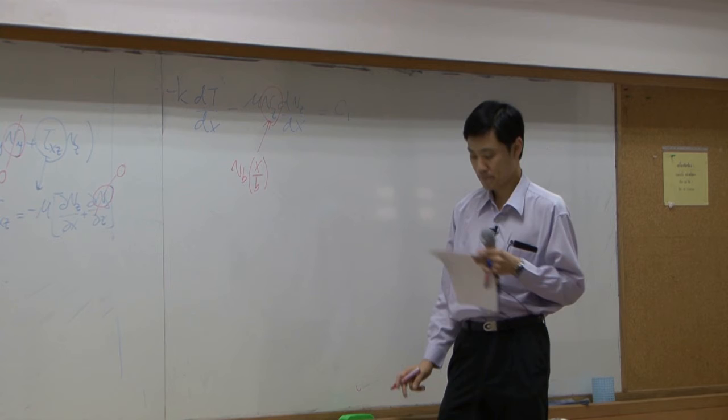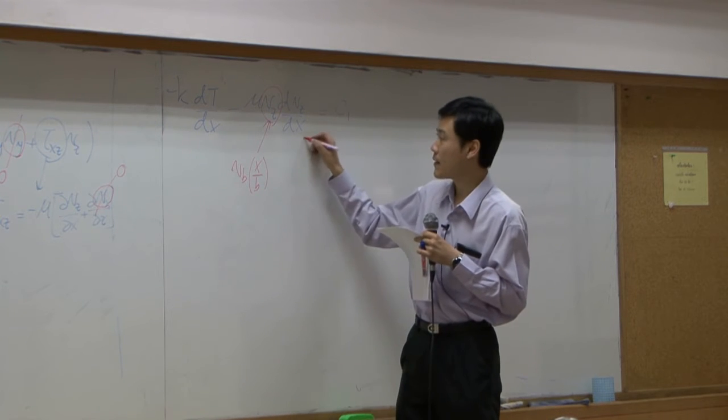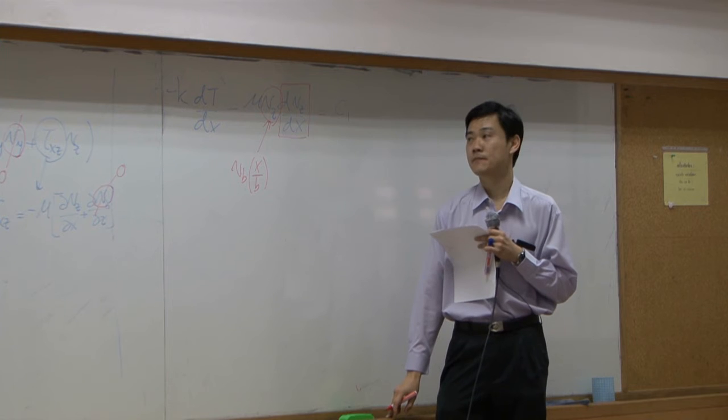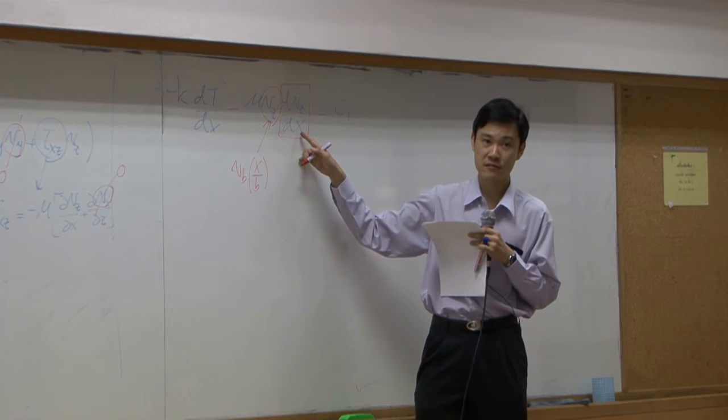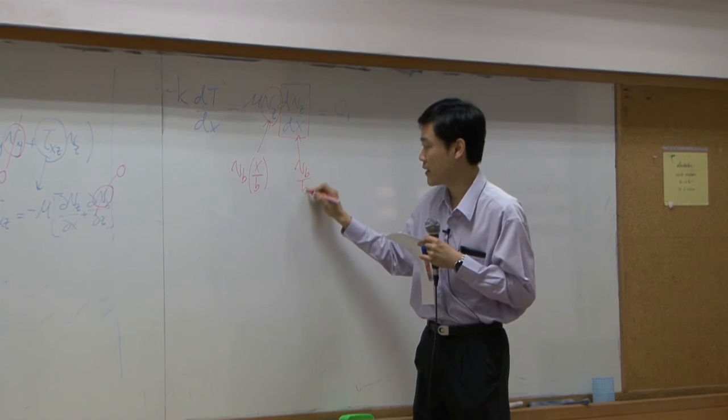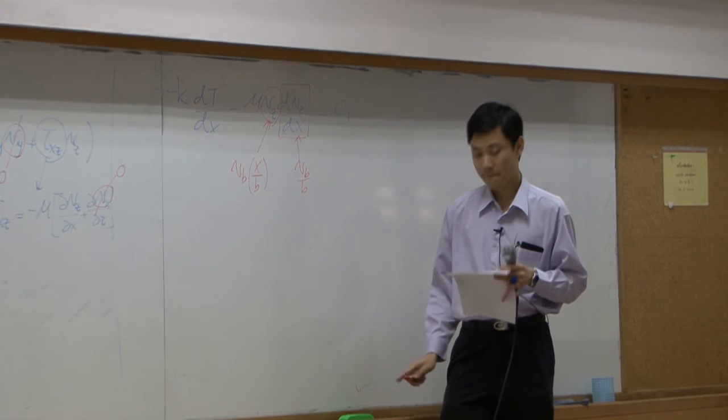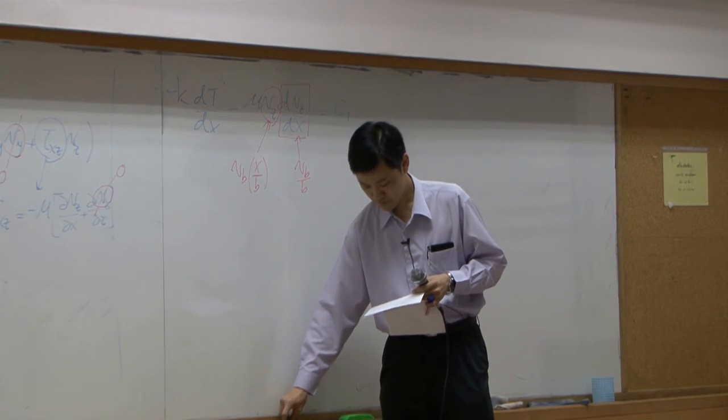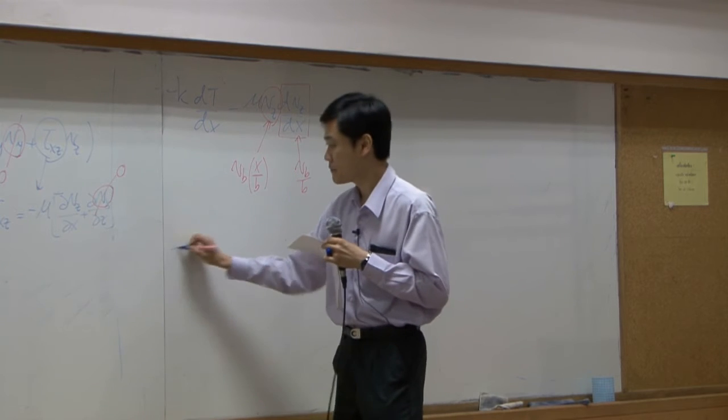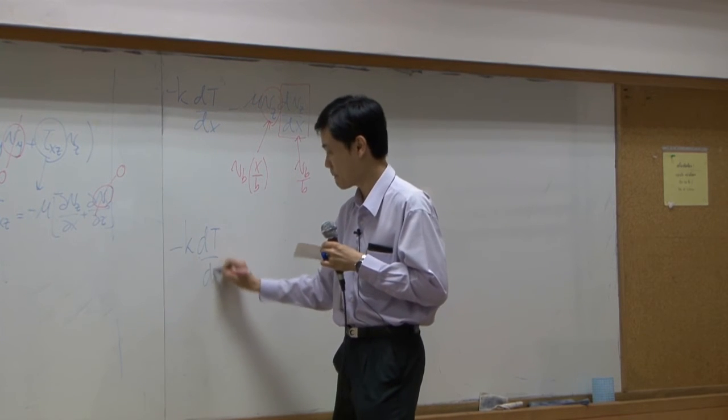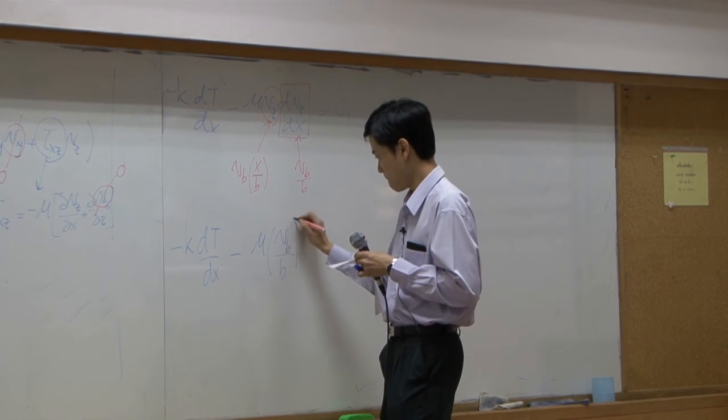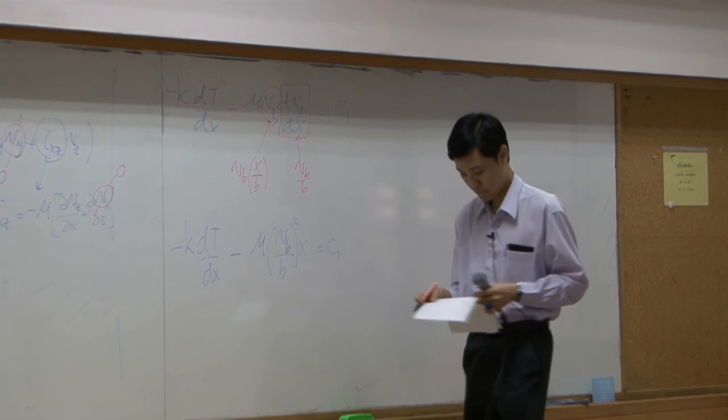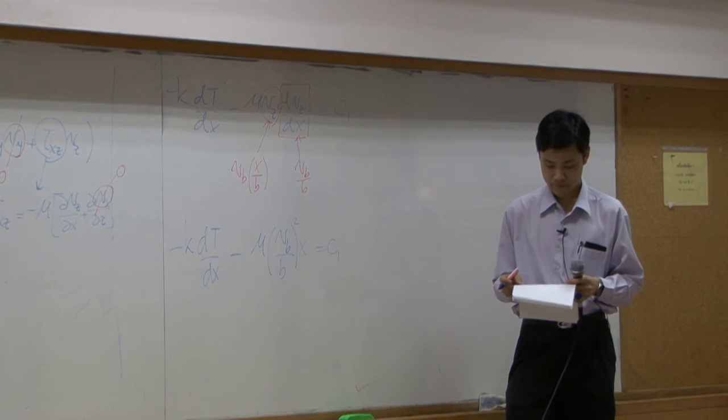What about this term? We can simply use this equation, differentiate it with respect to x. So this term becomes Vb over b. Plug it back in, you get this equation. Then, you get this equation.